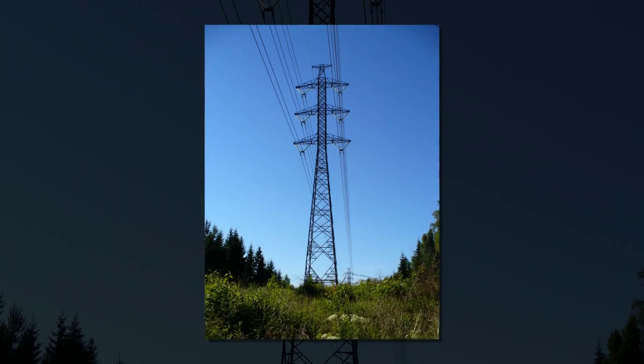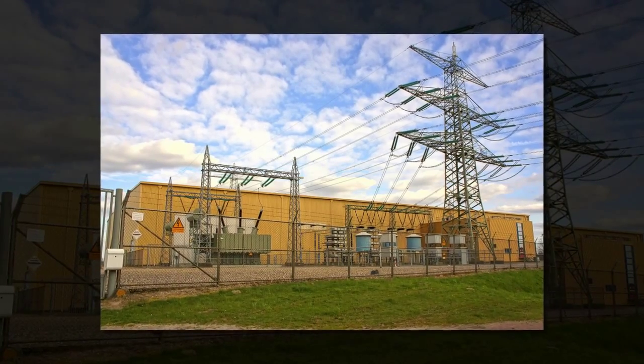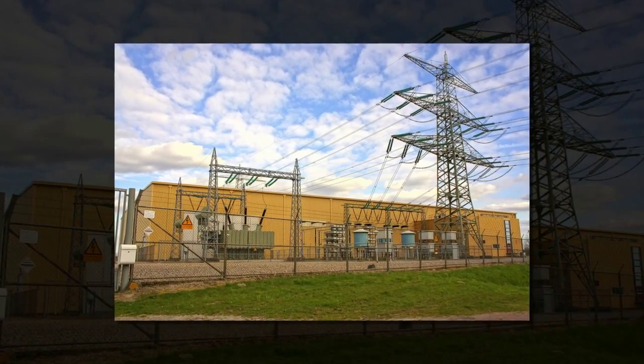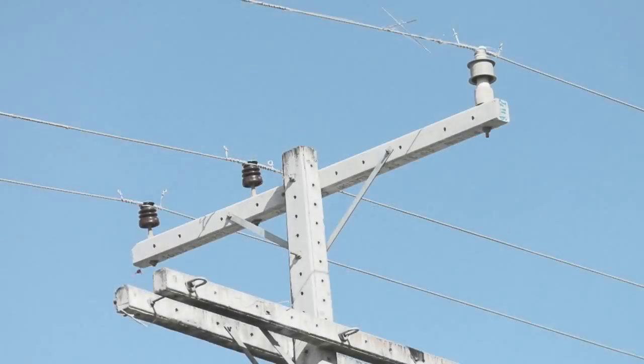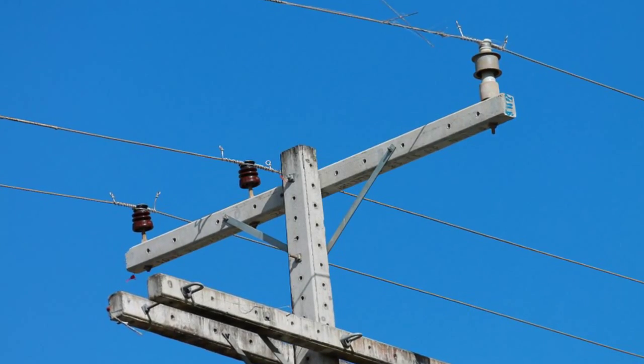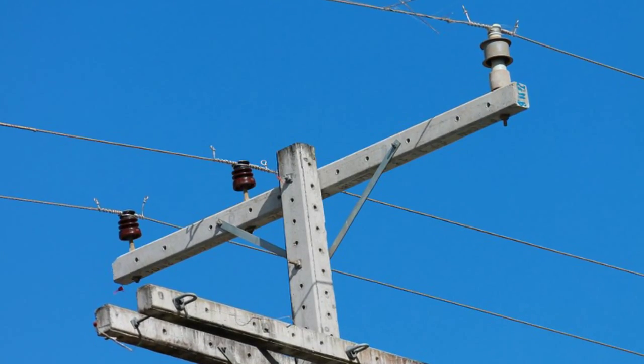While it is a bit dicey to compare electric current to the flow of water in a pipe, there are some similarities that might make it somewhat easier to understand. We can think of the flow of electrons in a wire as the flow of water in a pipe, according to Michael Dobson, a professor of physics at the University of Colorado Boulder.